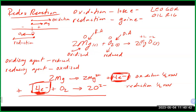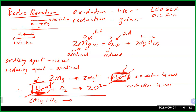We can add the two half reactions together. Before adding them, you must ensure the same number of electrons appears in both half reactions. If not, multiply by a common factor. The purpose is that electrons should always perfectly cancel out — you should never have electrons left over in the overall reaction. In this case the electrons cancel and we get our two magnesium oxide product.